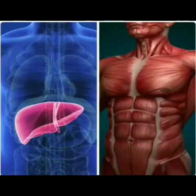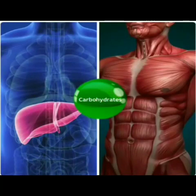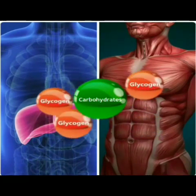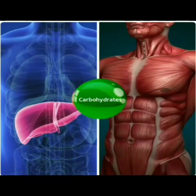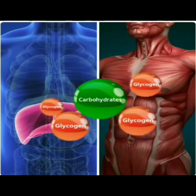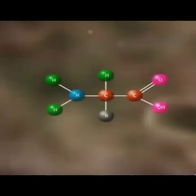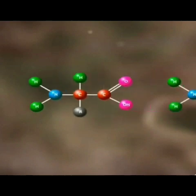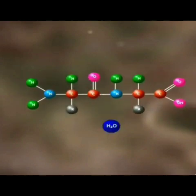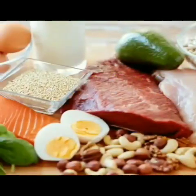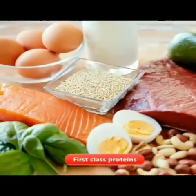Different food components: excess carbohydrates are stored in the liver and muscles in the form of glycogen. Proteins are macromolecules formed by bonding together many amino acids. Proteins of animal origin are called first class proteins. We gain 4 kilocalories of energy per gram of protein.